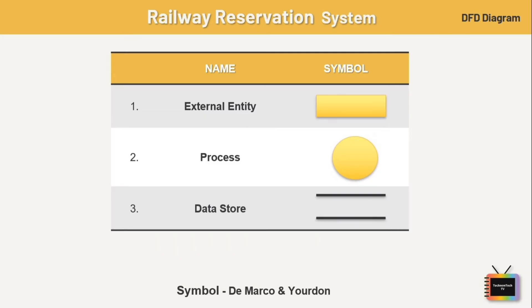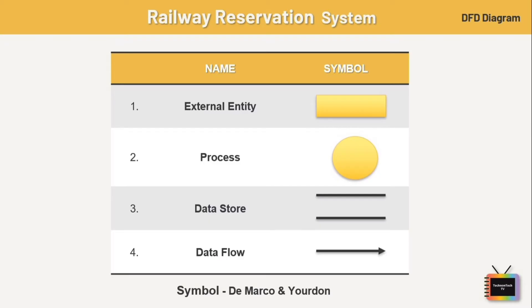Next we have data store, or we can say database — a database is a table that stores files or repositories for future use. Last we have data flow — data flow is the flow of data between external entities, processes, and data stores.